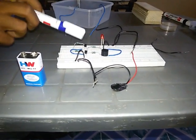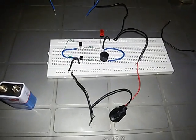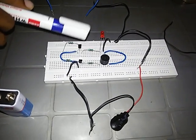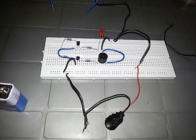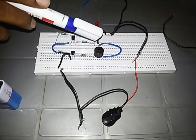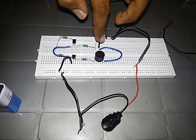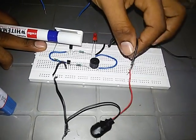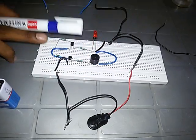The emitter of transistor is connected with each other and the collector of transistor is going to LED. This collector of transistor is going in buzzer. The cathode of LED is connected to each other and this is going in the positive terminal of the battery. This red wire is a positive terminal and this black wire is a negative terminal.